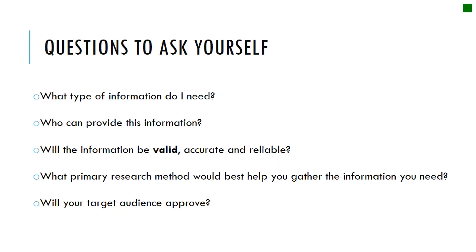Some questions to ask yourself when putting your methodology together: What type of information do I need? Who can get me this information — can I get it from a newspaper, or do I need to talk to journalists? Will it be valid, accurate, and reliable? What primary research method would best help me get the information I need? And when I have my information, would my target audience approve of the way I've collected it? If you have any further questions, be sure to ask them in class.